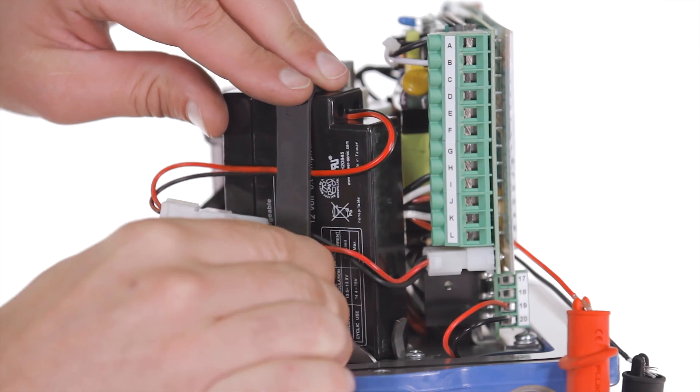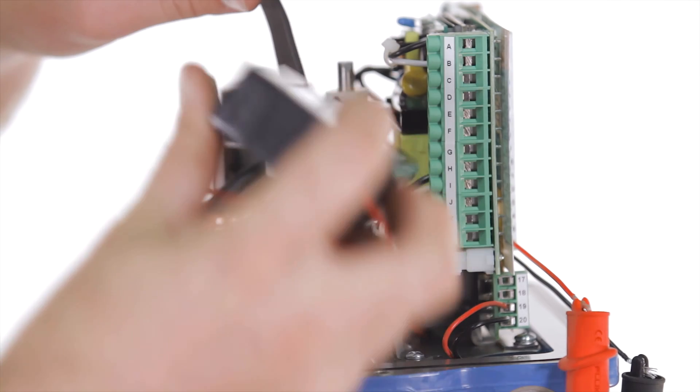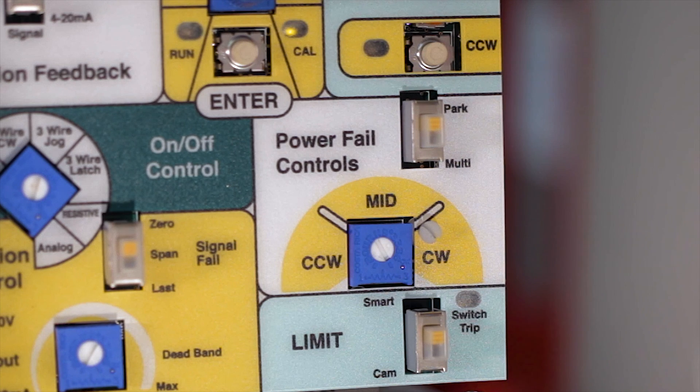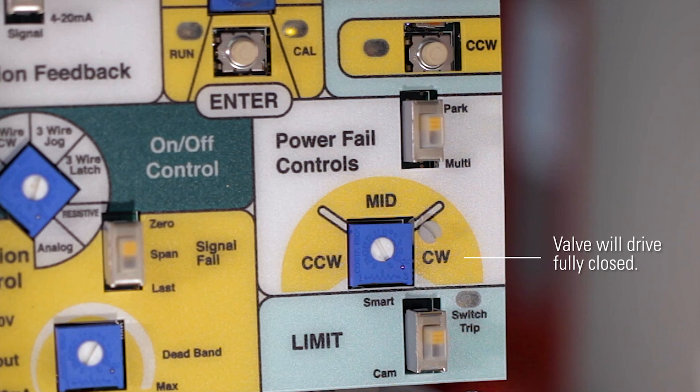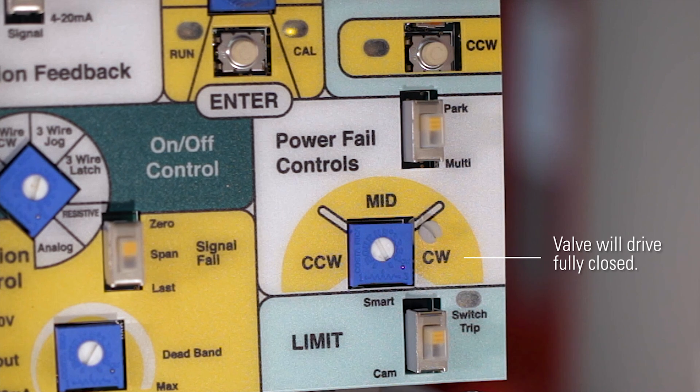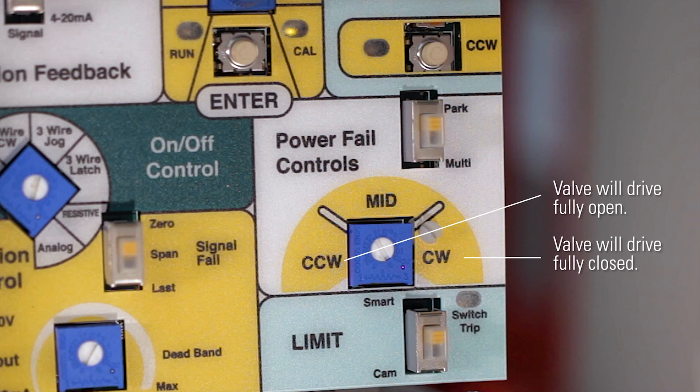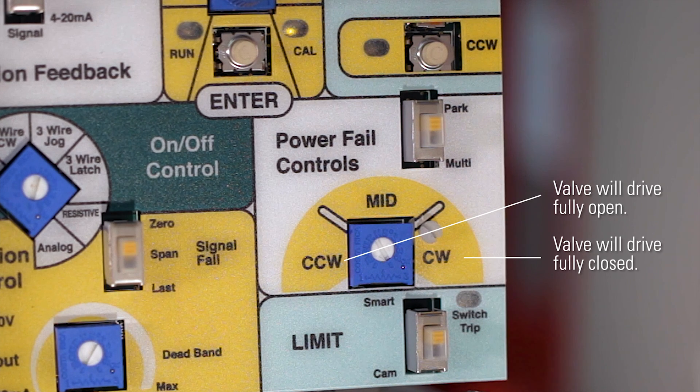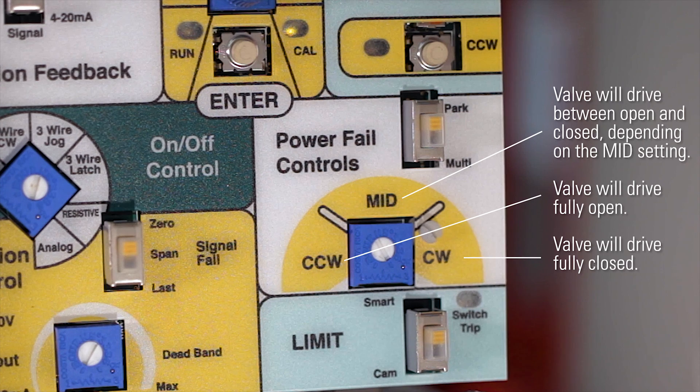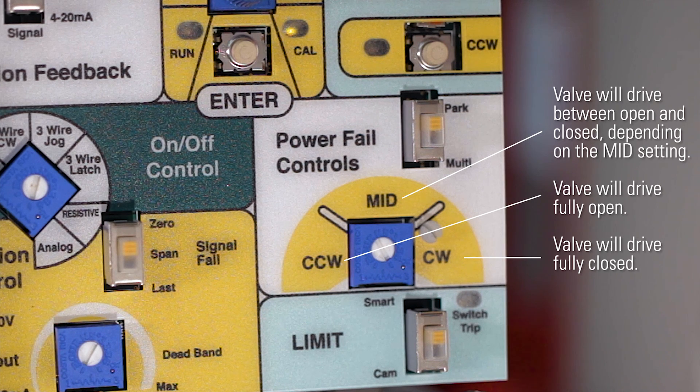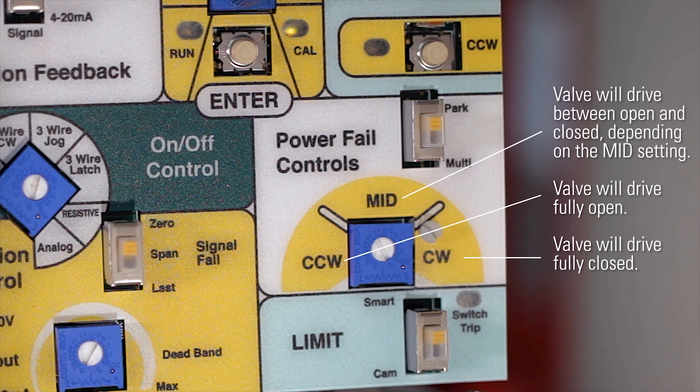The valvecon actuator is also equipped with a backup battery. If power to the actuator is lost, the power fail control switch provides options for the actuator. Clockwise, in which case the valve will drive fully closed. Counterclockwise, in which case the valve will drive fully open. Or mid, in which case the valve will drive between open and closed depending on what your mid position has been set to.